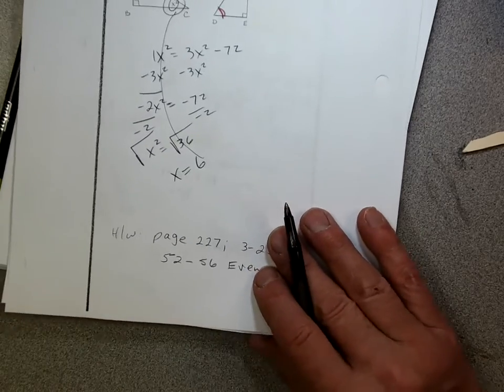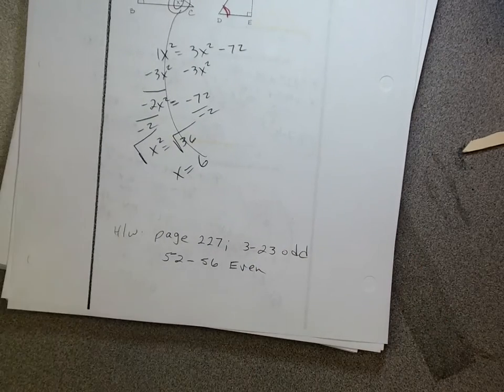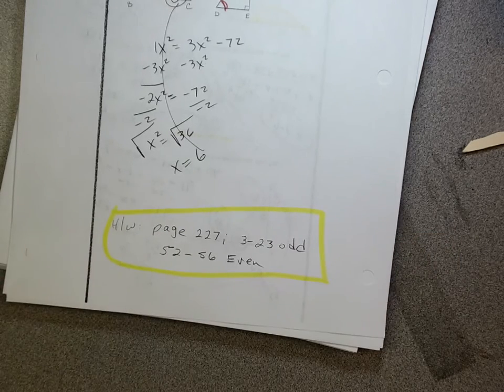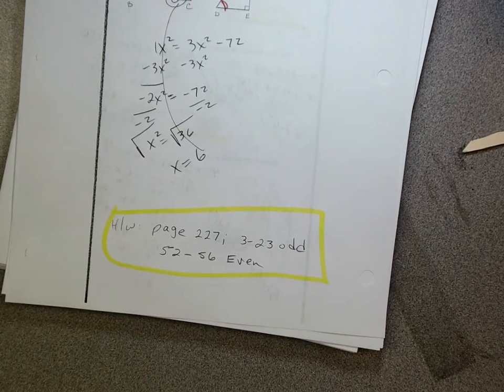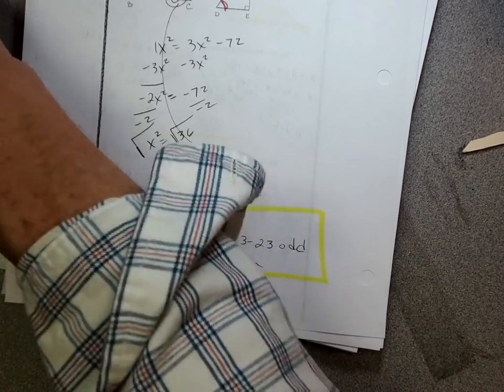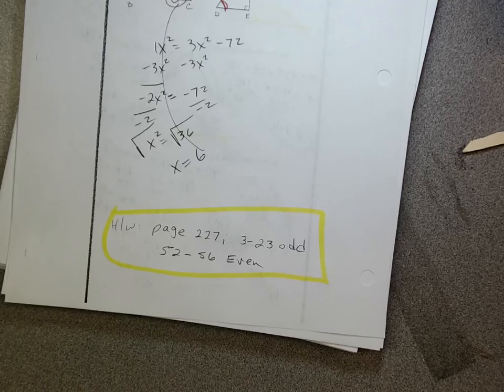Okay, so homework for today, you guys. Page 227. We're going to do 3 to 23 odd. 52 to 56 even. Draw the picture. Show the work. It's on film. Draw the picture. Show the work, all right? Otherwise, you will not get credit, all right? Awesome. Thank you.